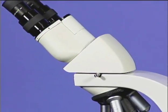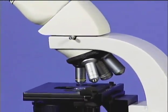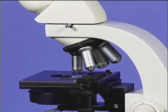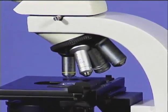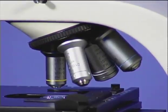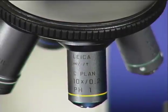The two lens systems that actually produce the magnified image are the objective and the ocular lens systems. The images produced by these two lens systems differ in an important way.